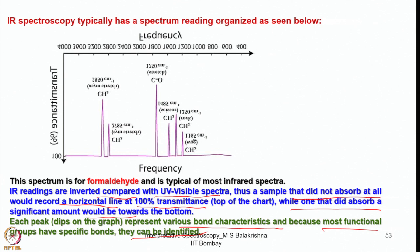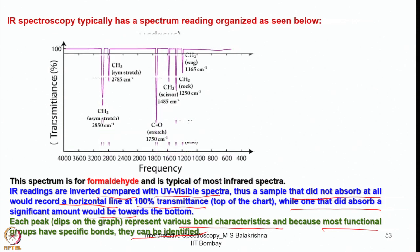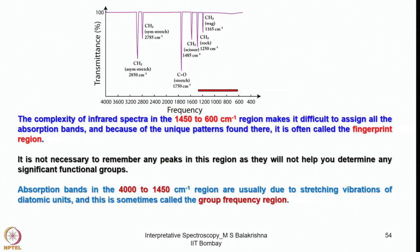If plotted as absorbance it would look rather odd, which is why the transmittance format is more convenient. The complexity of infrared spectra in the range 1450 to 600 cm⁻¹ makes it difficult to assign all absorption bands, and because of the unique pattern it is called the fingerprint region. It is not necessary to remember any peak in this region as they will not help you determine any significant functional groups.